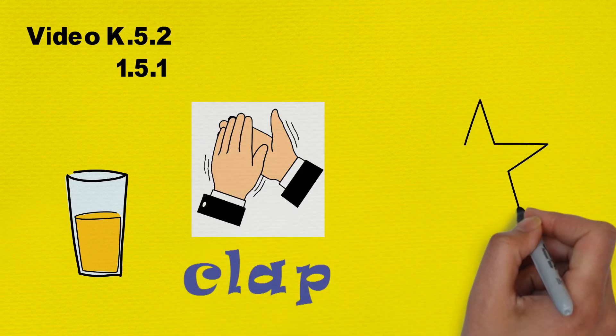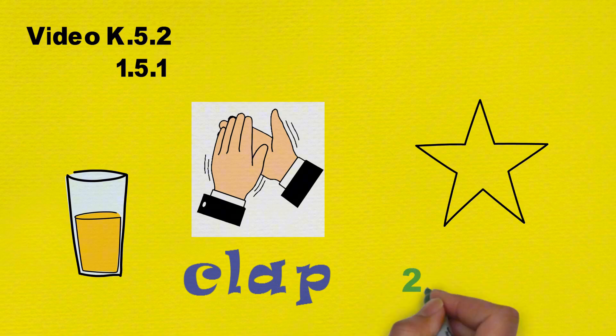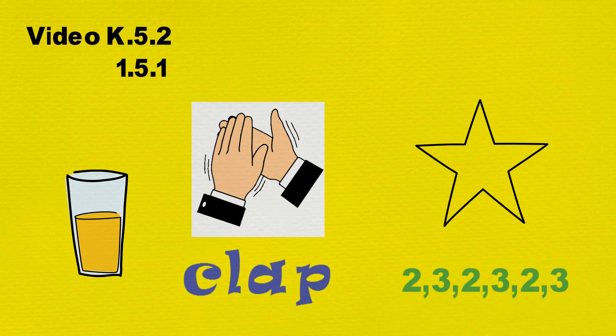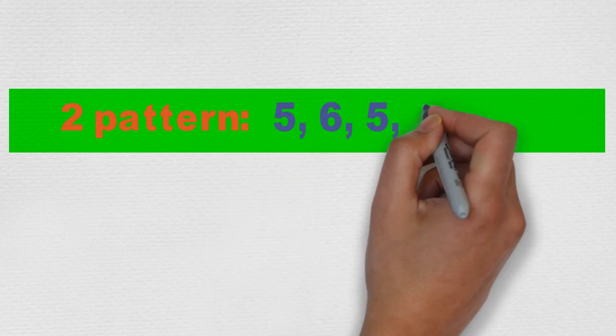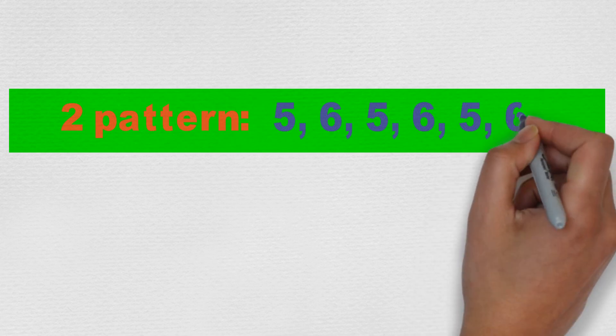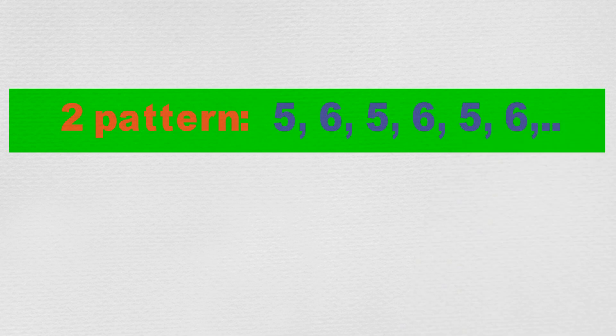In videos K.5.2 and 1.5.1, Max and Min looked at repeating patterns with objects, actions, sounds, symbols, and numbers. Sometimes the repeating pattern has two things repeating — a two-pattern — such as 5, 6, 5, 6, 5, 6, 5, 6.